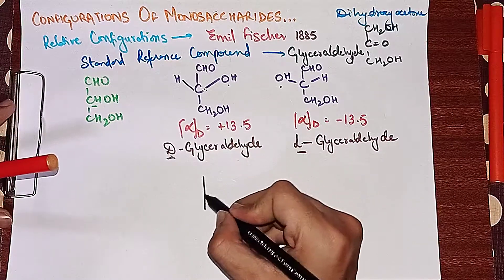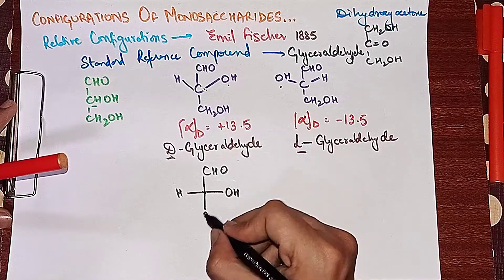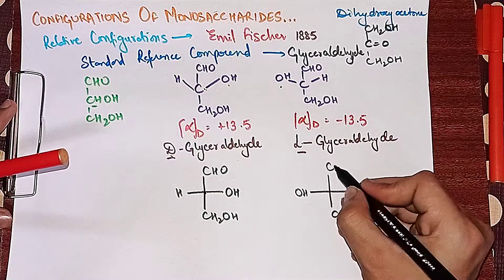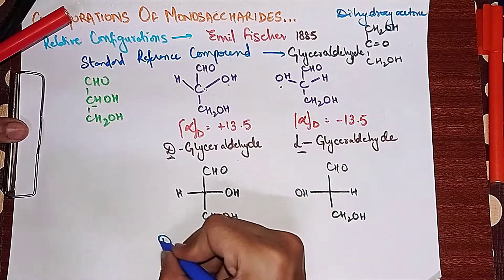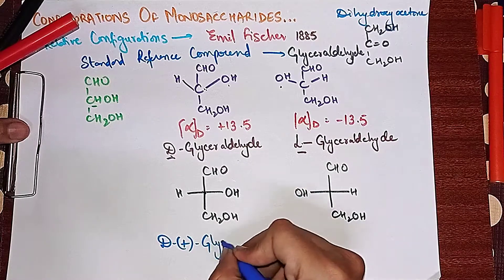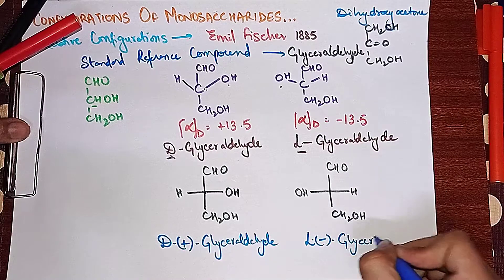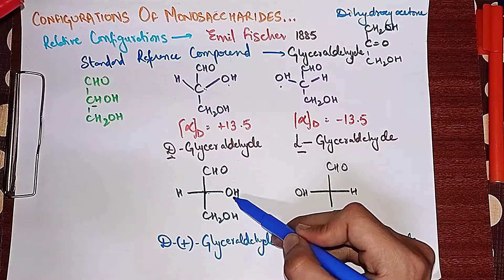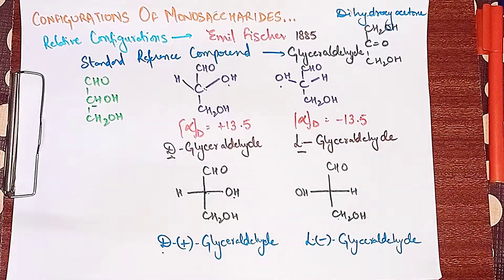In Fischer projection formulas, we do not explicitly denote carbon atoms — the intersection points represent carbon atoms. For example, with OH on one side and H on the other, with CHO at the top and CH2OH at the bottom. One formula has OH on the right (D-glyceraldehyde) and the other has OH on the left (L-glyceraldehyde), making them D(+) and L(−) glyceraldehyde respectively.